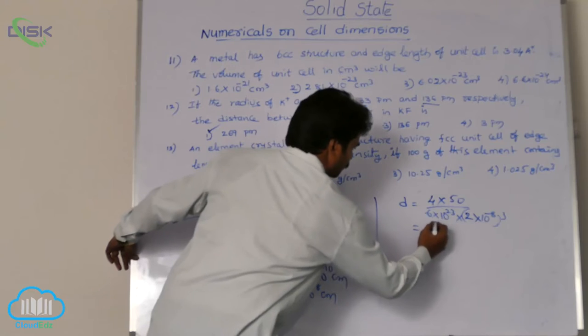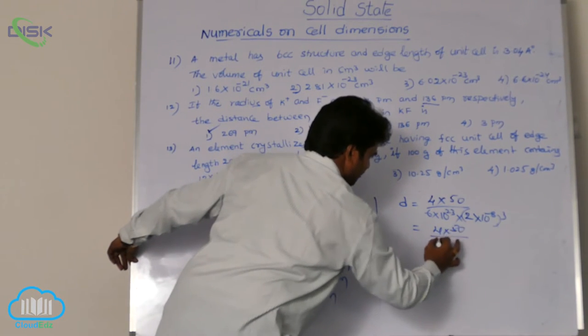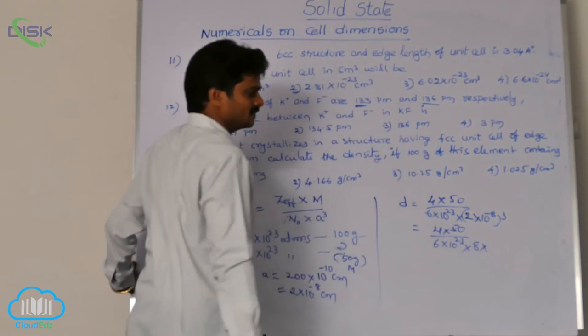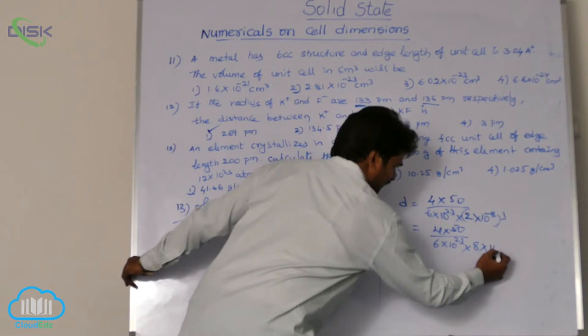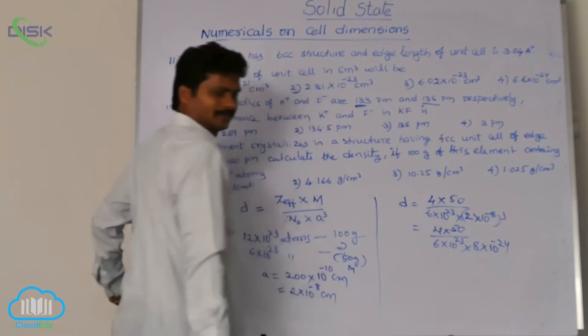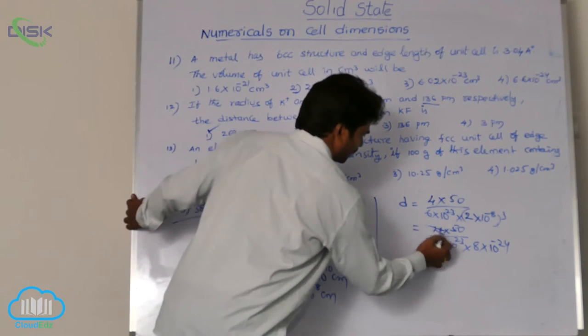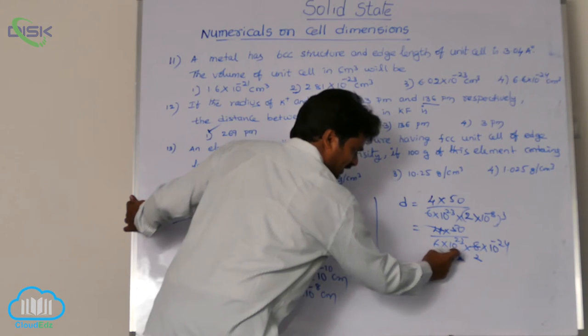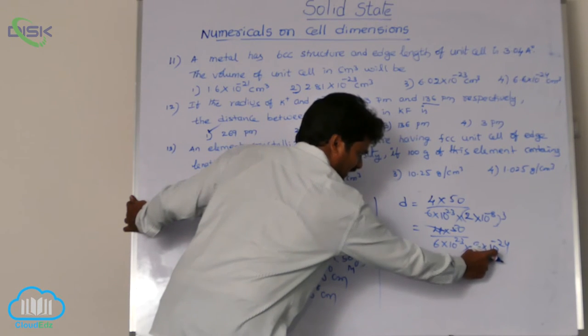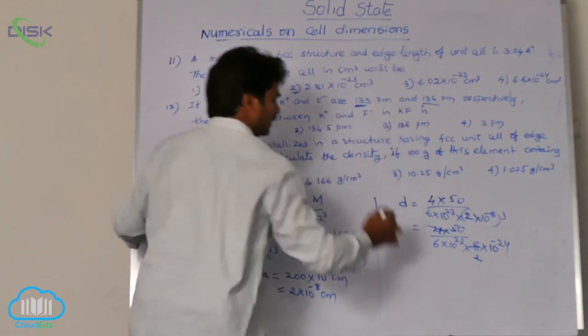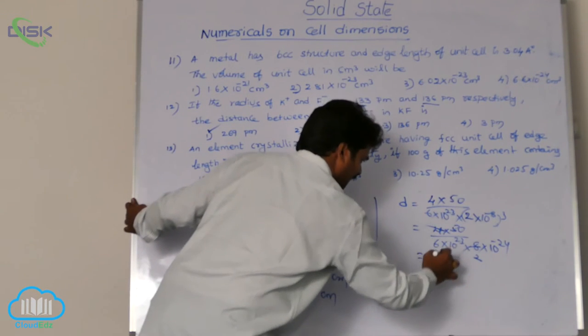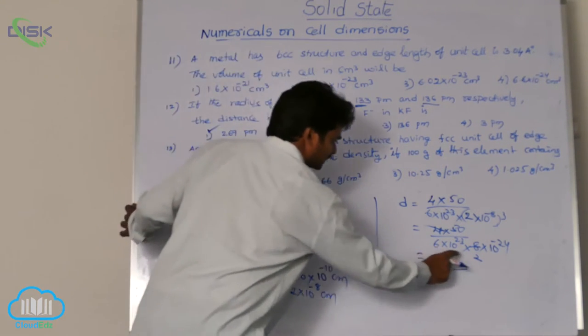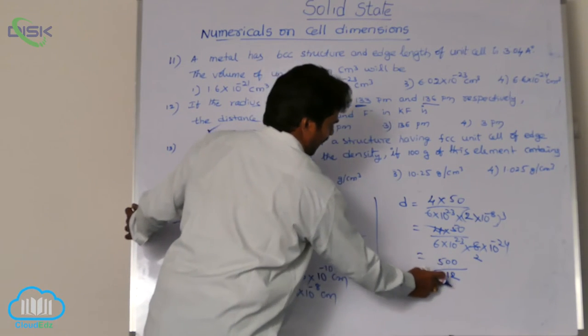Now here 4 into 50 by 6 into 10 power 23 into 2 cube means 8, 8 into 10 power minus 8 into 10 power minus 24. Now see in this, this 4 in 8 two times. Now this 10 power 23, it is 10 power minus 24. Here 10 power minus 1 remains. If that goes up then it becomes 50 into 10, then it becomes 500 in the numerator. In the denominator 6 into 2 is 12. So 500 by 12.